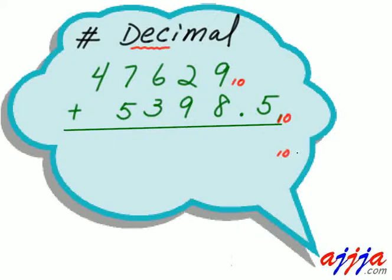Other base numbers, which are non-decimal numbers, we must write the base explicitly — based on 8, we write 8; based on 9 or 2, whatever. So if you see nothing written, that means it's automatically a decimal number.